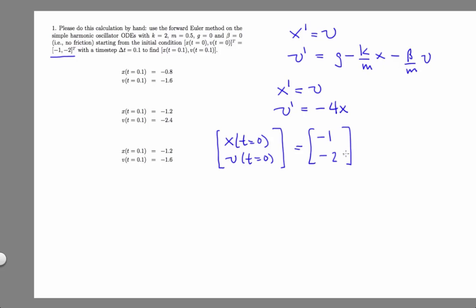Now recall, forward Euler advances from the current state in the following fashion. It takes the place where you are, computes the slope at that point, and walks along that slope for one time step to get the next point, delta t later.